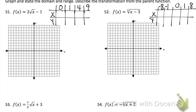For problem 51, we have a square root, so to graph this, make the inside of our root equal to 0, 1, 4, and 9. Since there's just an x in there, plug those values in for x and then graph it. For problem 52, we have a cube root — make the inside equal to negative 8, negative 1, 0, 1, and 8. The inside is x minus 3, so ask what value makes the inside each of those numbers. For example, what makes it 0 is 3, since 3 minus 3 is 0; what makes it 1 is 4, since 4 minus 3 is 1.